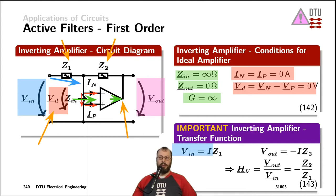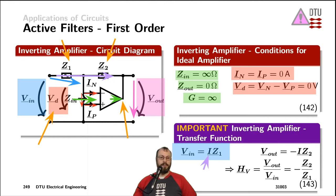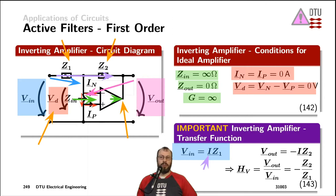With the current through that impedance, we can rewrite the input voltage as the current through the impedance times the impedance itself. As there is no current flowing into the operational amplifier, the current through Z1 also flows through Z2. The output voltage is applied from one terminal to the other, and following the potential all the way over to the input of the op-amp — since there is no voltage across the inputs — we end up with the output voltage across Z2. However, the output voltage is applied the other way across Z2 than the current flowing through it.